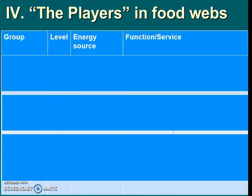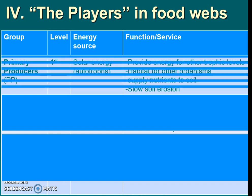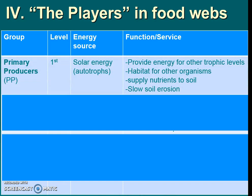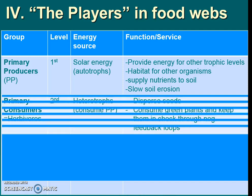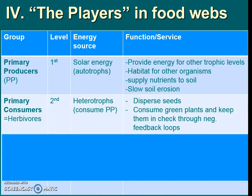As IB students we have to really understand what these terms are and what they do for the ecosystem. I've created a table to help us keep everything organized. Producers are primary producers at the first level — they use solar energy, they're autotrophs. They provide energy, they provide habitat, they supply nutrients, and they help with erosion. Primary consumers are next — they're eating these plants, they're herbivores.